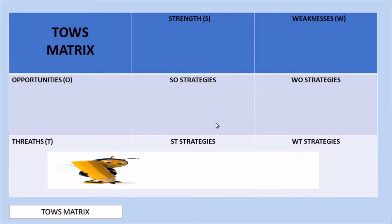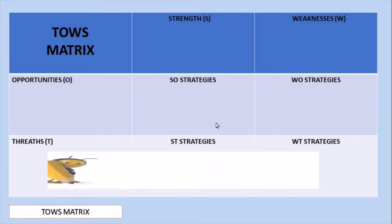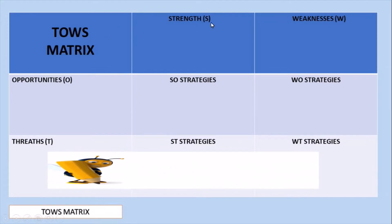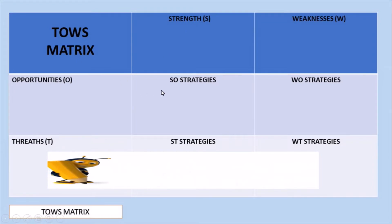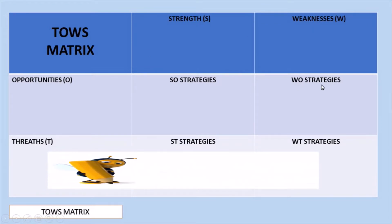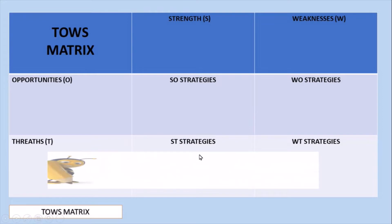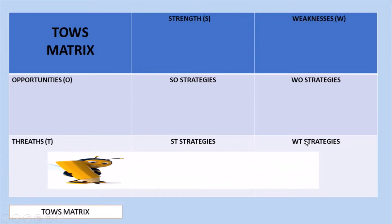The TOWS matrix is almost the same as the SWOT matrix, but it is more useful for deliberating the opportunities of the organization. It is divided into Strengths (S), Weaknesses (W), Opportunities (O), and Threats (T). With the TOWS matrix, we combine Strengths and Opportunities for SO strategies, Weaknesses and Opportunities for WO strategies, Strengths and Threats for ST strategies, and Weaknesses and Threats for WT strategies.